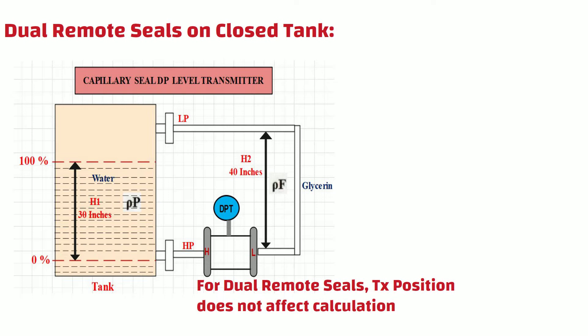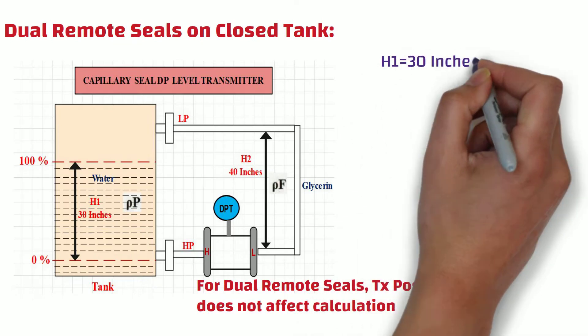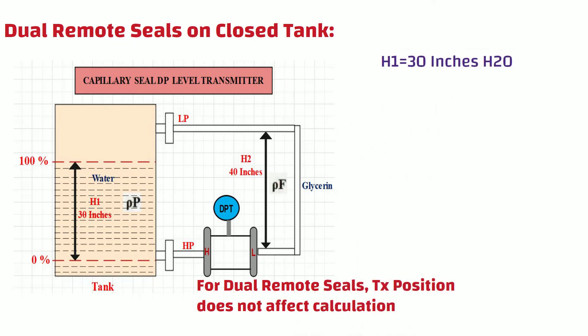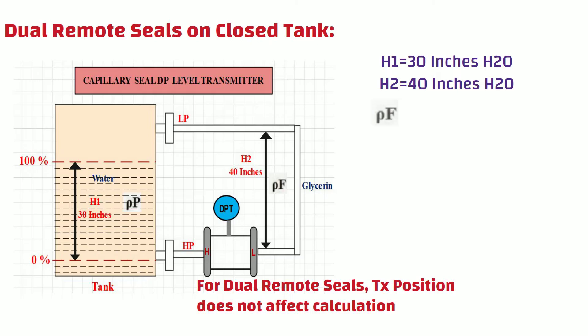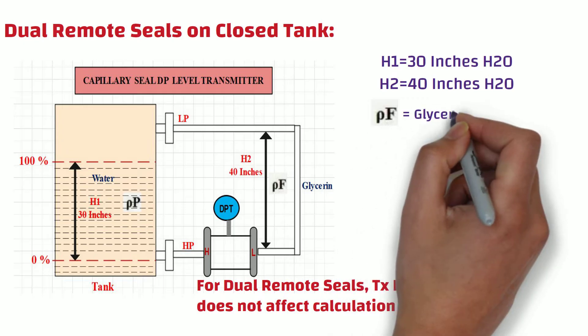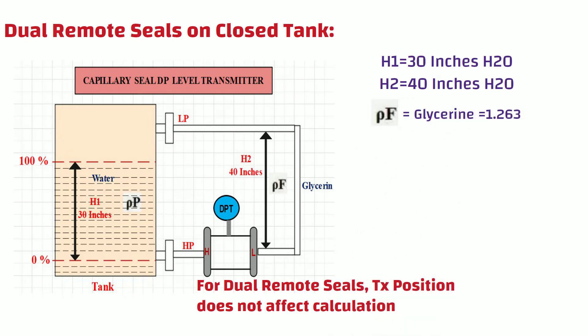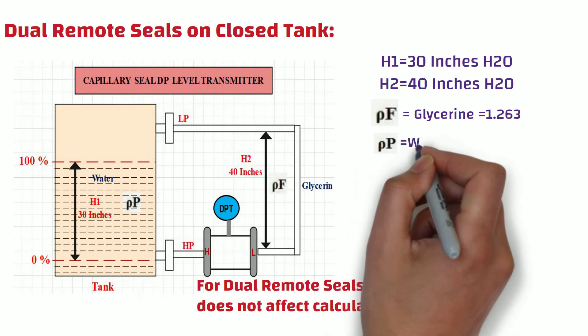As you can see, in this example, the distance between bottom tap and maximum level height is 30 inches, and the elevation distance between lower seal tap and upper seal tap is 40 inches. In addition to this, the remote seal is filled with glycerin, and the specific gravity of glycerin is 1.263. The process fluid is water, and its specific gravity is 1.